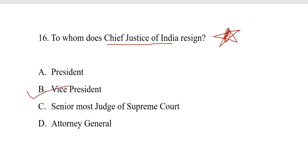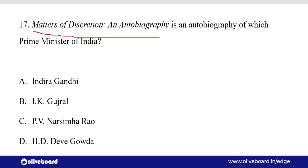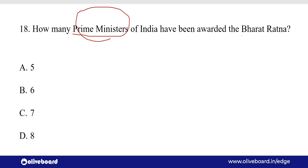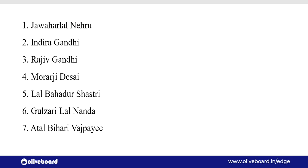Matters of Discretion and Autobiography — यह Autobiography भारत के किस प्रधान मंत्री की है? 'Matters of Discretion' Autobiography है I.K. Gujral की। How many Prime Ministers of India have been awarded Bharat Ratna? इसका answer है total of 7 Prime Ministers — Jawaharlal Nehru, Indira Gandhi, Rajiv Gandhi, Morarji Desai, Lal Bahadur Shastri, Gulzarilal Nanda, और Atal Bihari Vajpayee।